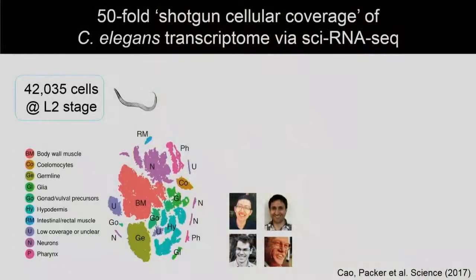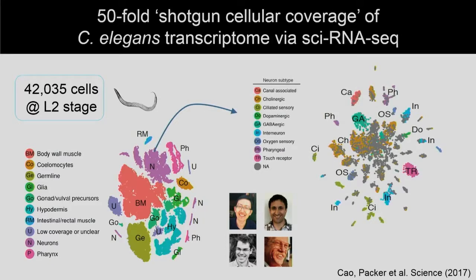The labels are attached to the nucleic acids in that cell so that when you sequence at the end, you can group all content with the same barcodes and say that came from a single cell. As an example, we've applied this to C. elegans, where we can sample 40,000 cells at the L2 stage — about 50X coverage since there are only 800 cells per organism at this stage. We can build t-SNE maps of different cell types, and if we pull out the neurons and recluster them, we see clusters including some corresponding to just one or two unique neurons in the L2 worm.